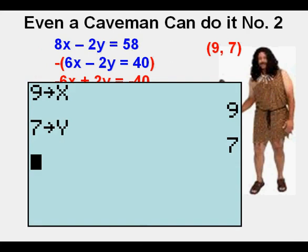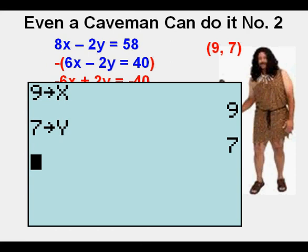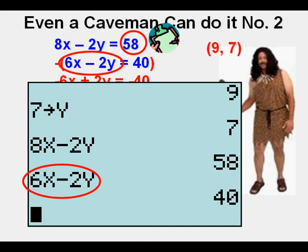We check Aug by storing 9 for x and 7 for y. We enter the left side of the first equation, 8x minus 2y. That equals 58. Check. Now, we enter the left side of the second equation to check. Again, it has to be the original equation, 6x minus 2y, and that equals 40. Check.